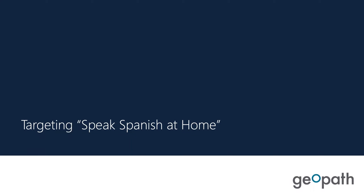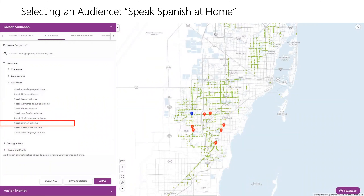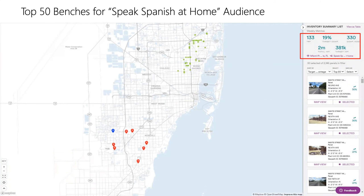Here's our target for speaking Spanish at home. We were able to go into the Insights suite, select this audience from the population demographics language area, and pull the top 50 benches. This was an eye opener for us. In the North Miami area where Fisher is located, they were advertising on Univision on television — they wanted to promote their Spanish-speaking ability and target this group. The metrics show they're way over-indexing for reaching the target of speaking Spanish at home, which speaks to the efficiency at reaching that target.